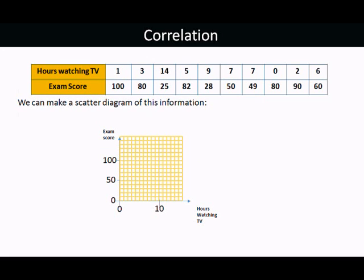We can make a scatter diagram of this information. The person that spent one hour got 100 in the test. This person that spent three hours watching TV got 80 in the test. 14 hours watching TV, that person only got 25 in the test. 5 hours watching TV, that person got 82 in the test.